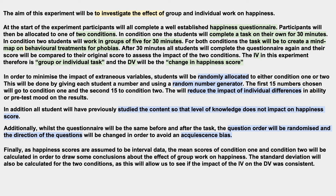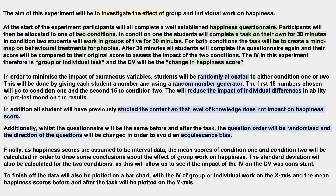And then finally, we have the data analysis — important bits highlighted. I've assumed that the creation of a happiness score is going to be interval data, which means I'm going to use the mean and the standard deviation. If you had decided to use a happiness rating scale instead, you might have chosen ordinal data and therefore the median. But for me, I've gone for the mean and the standard deviation because I'm using interval data. That allows me to draw conclusions about the effectiveness of group work on happiness, and it also allows me to see if the impact of the IV on the DV was consistent — that's the standard deviation.